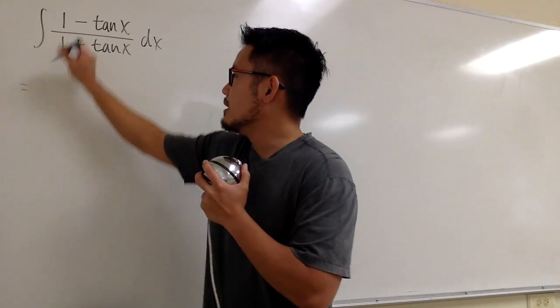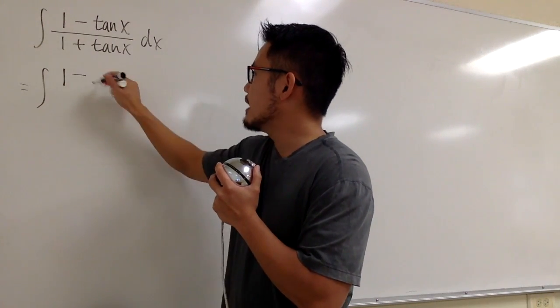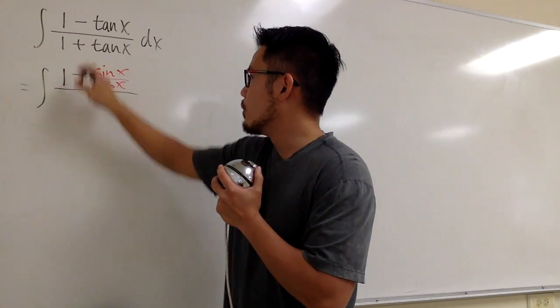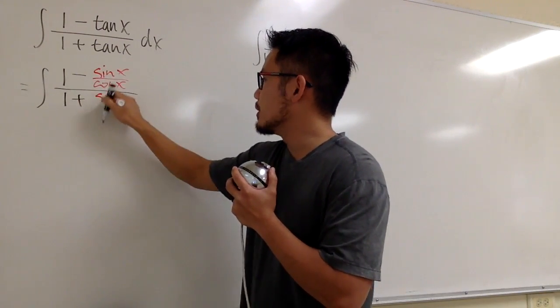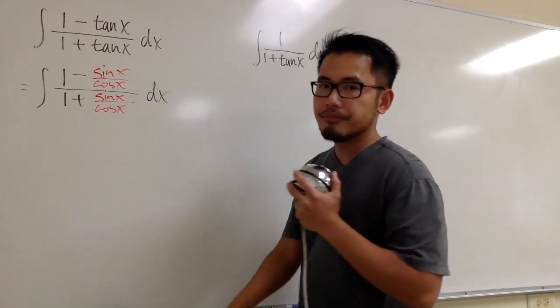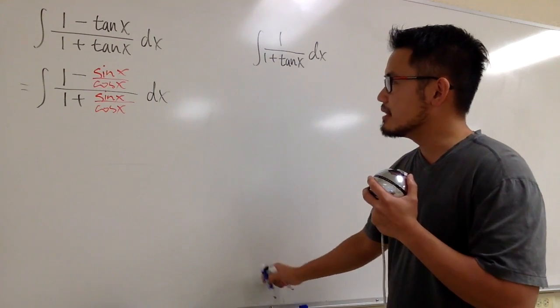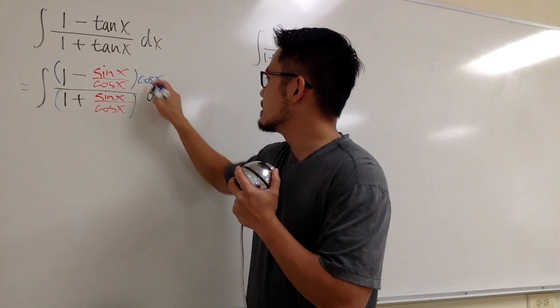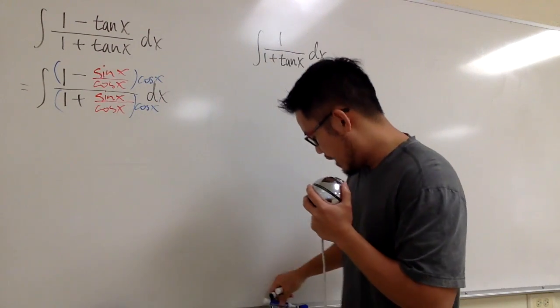So let me try to change this in terms of sin and cos. So this is going to be the integral, 1 is just 1, minus, for tangent x, we can write that as sin x over cos x, and then this is over 1 plus this tangent x in radius, sin x over cos x, and then we still have the dx, right? And we end up with a complex fraction, but this is no big deal, because we can just multiply the top and bottom by cos x. That will take care of the complex fraction.